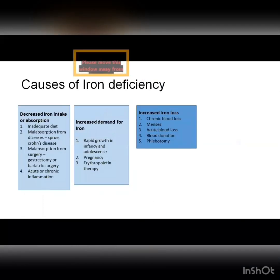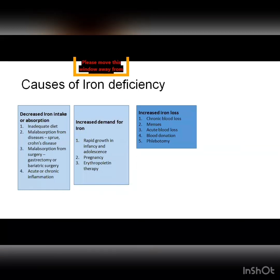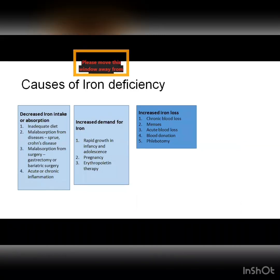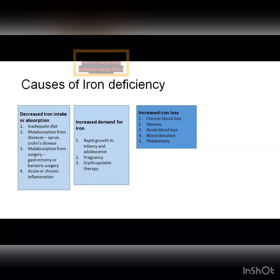To summarize, the causes of iron deficiency anemia may be due to decreased supply — decreased dietary content or malabsorption — increased demand in different subsets of people such as those growing rapidly or during pregnancy, or, in the majority of cases, increased loss, most commonly chronic blood loss.